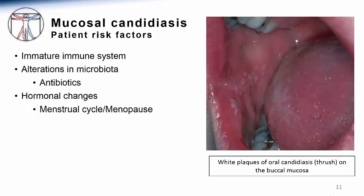Since Candida species most often exist on mucosal surfaces, it is at these sites where Candida infection most commonly begins. Which patients are therefore at risk for developing mucosal Candida infections, as opposed to being merely colonized by these fungi? In the image demonstrated here, we can see a simple case of localized thrush, or oral candidiasis. It presents as white plaques on the oral mucosal surface.